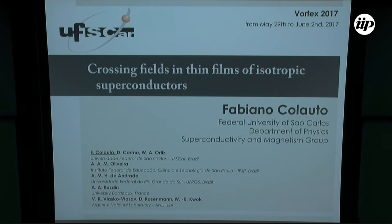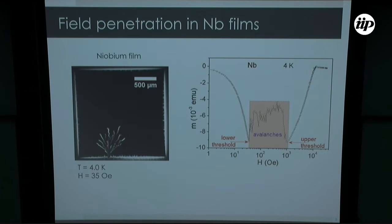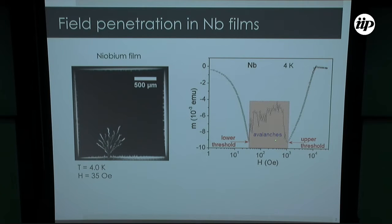I'd like to start by showing how superconducting films behave under a perpendicular magnetic field. First, let's see the magnetization measurement against the magnetic field — this is on a logarithm scale to see two threshold fields. When we apply a magnetic field at some threshold field, there are discontinuities, and these discontinuities are related to avalanches. Up to the upper threshold field we still have these avalanches, and then the curves start to be smooth again.